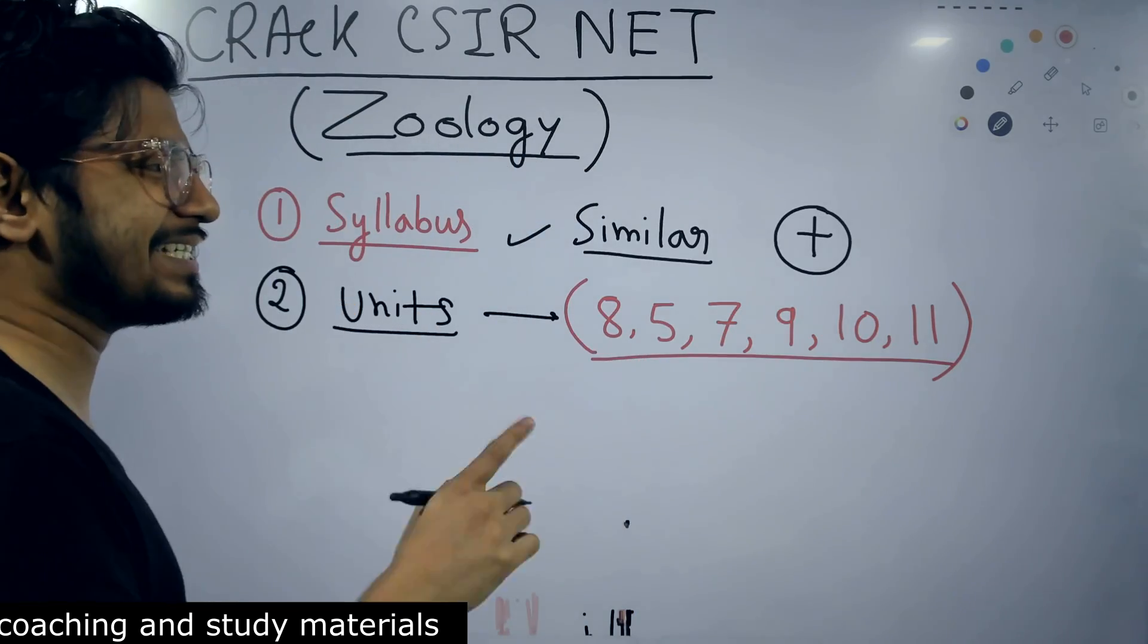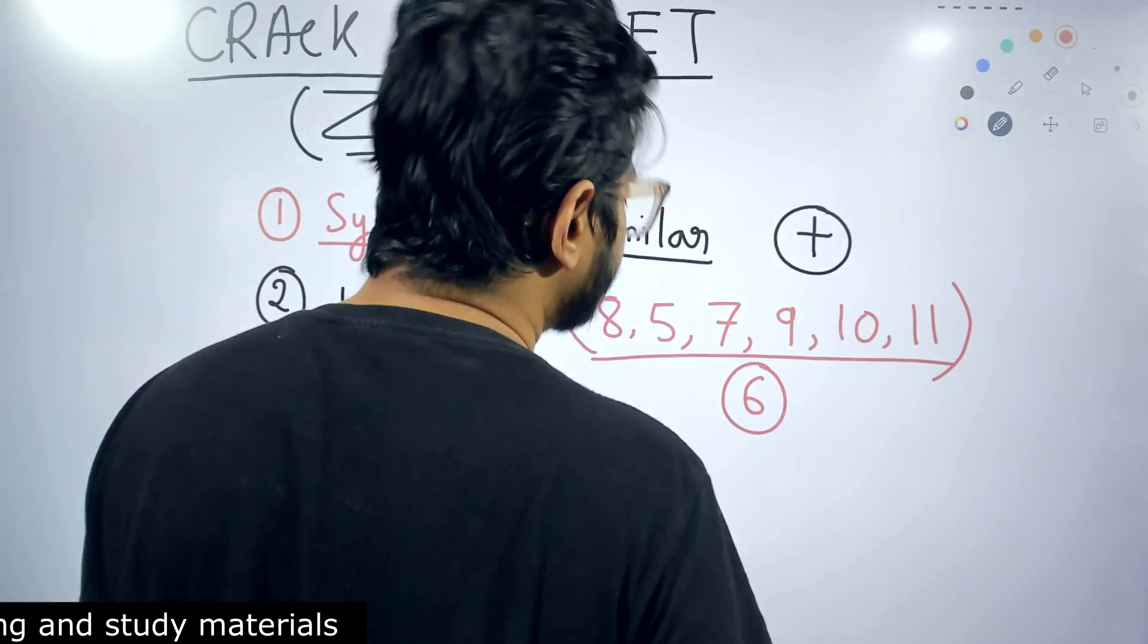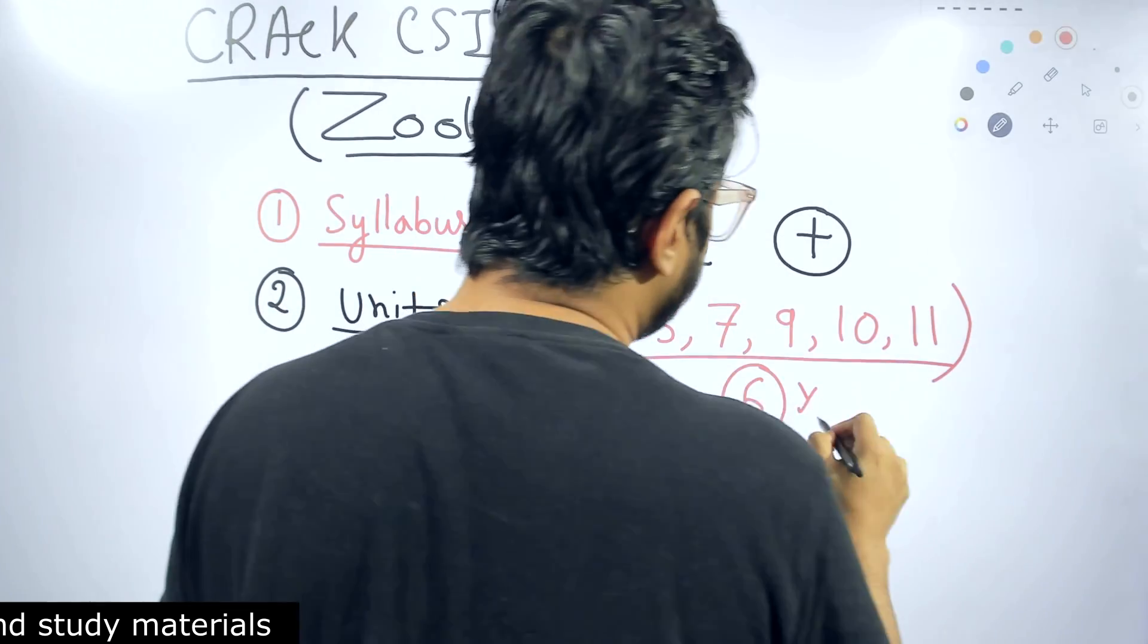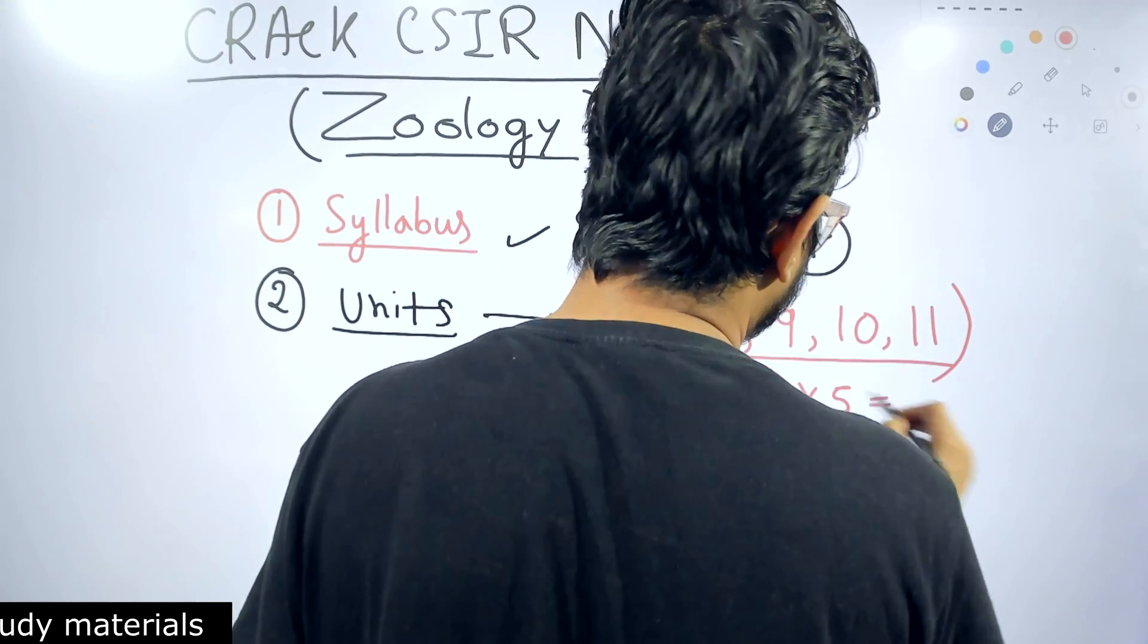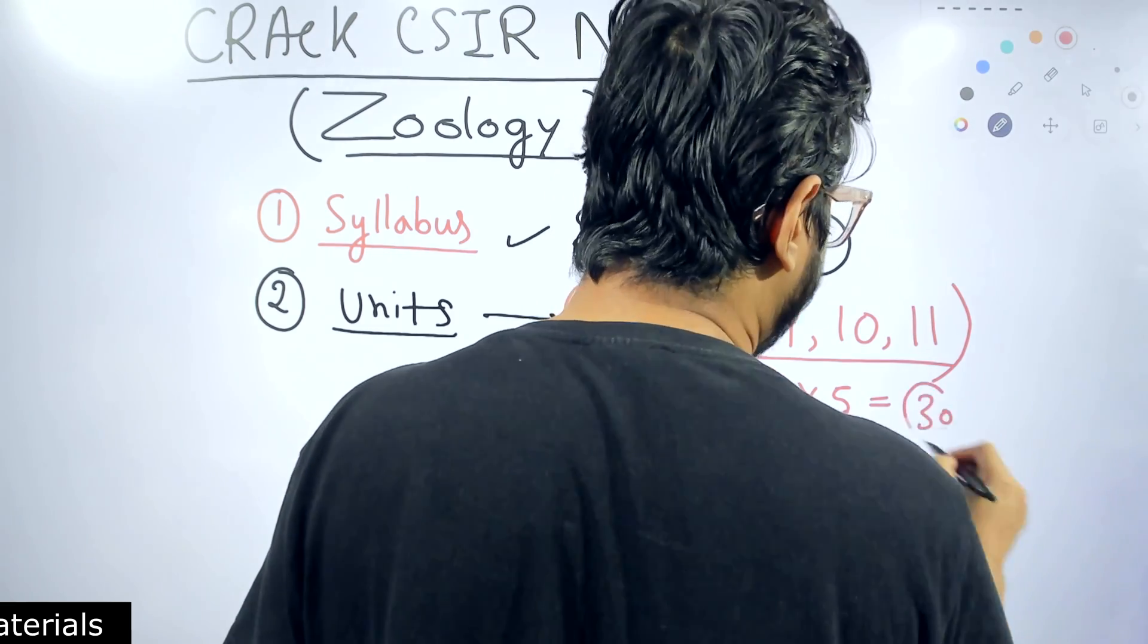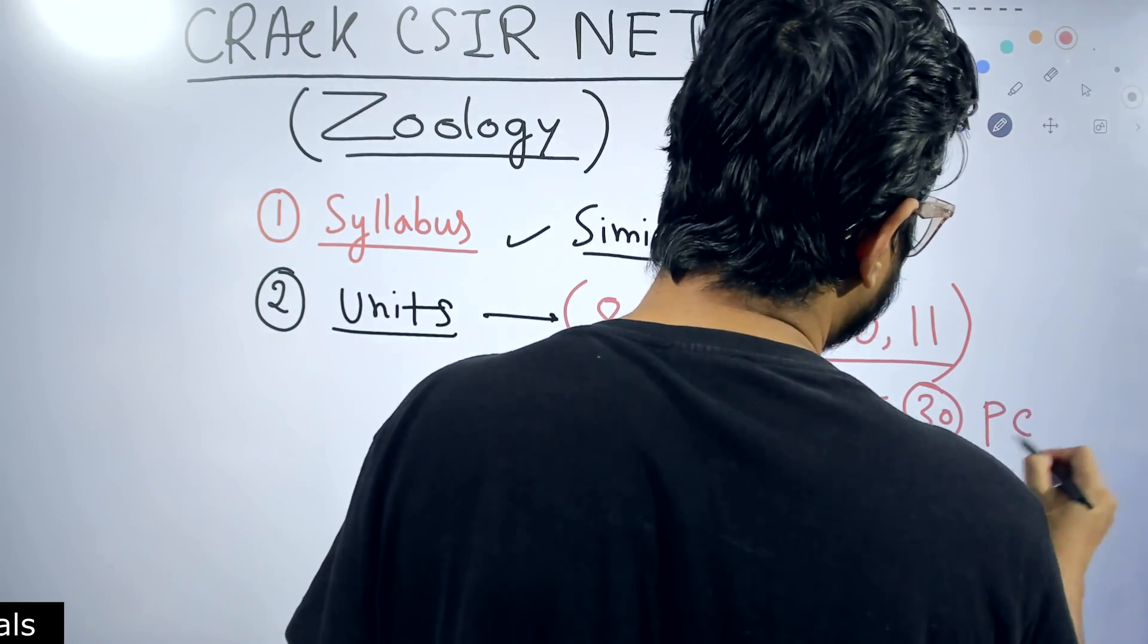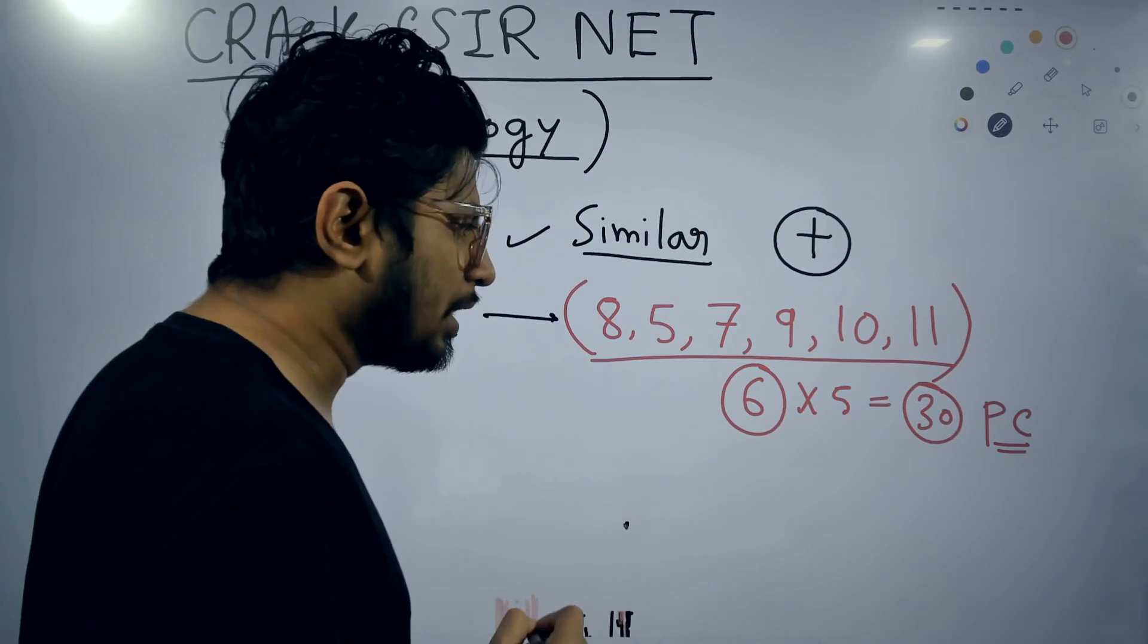There are total 6 units, and on average you can expect 5 questions from all these units. So 30 questions at least in Part C you can expect from there.